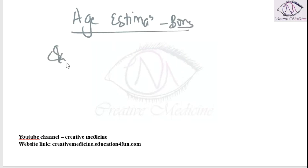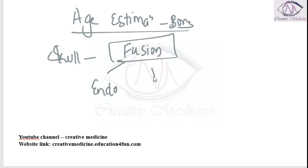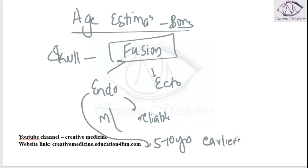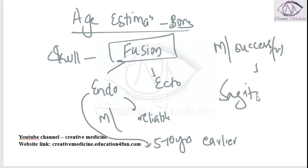Age from the skull is determined by fusion of skull sutures. Fusion occurs both endocranially and ectocranially. The most reliable fusion is by endocranial fusion, which mainly begins 5 to 10 years earlier than ectocranial fusion. Among the sutures, the most successful estimate is done by the sagittal suture, followed by the lambdoid suture, followed by the coronal suture. Best estimation is done by the sagittal suture.